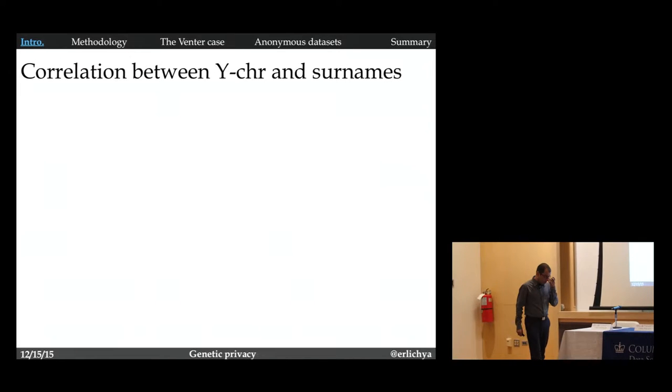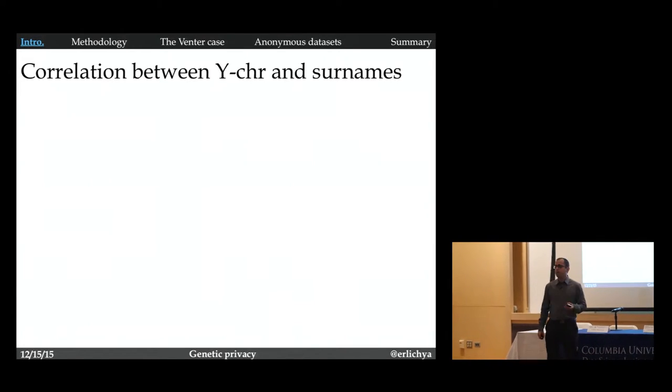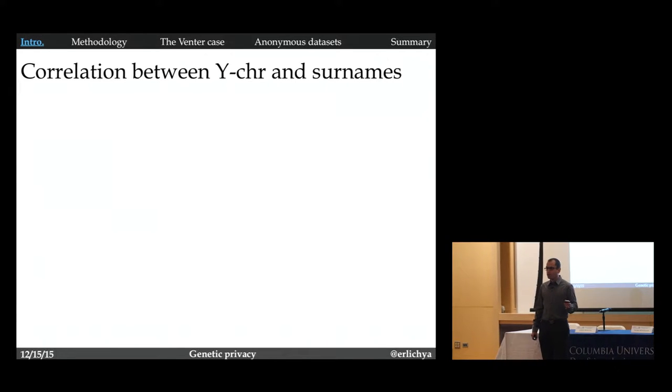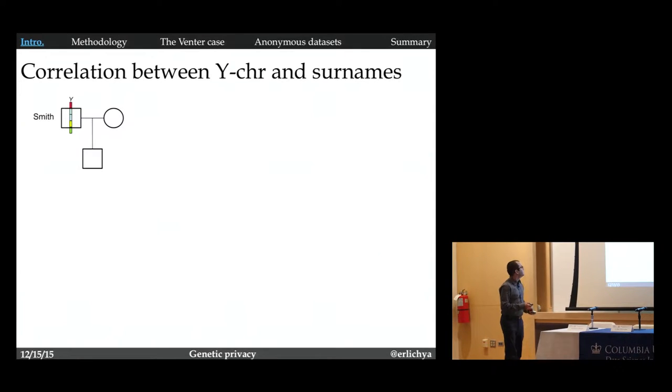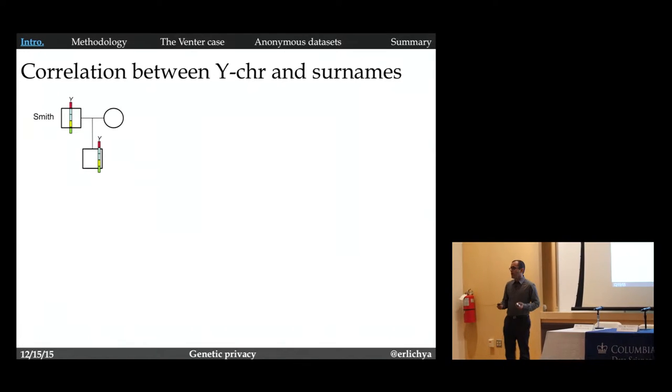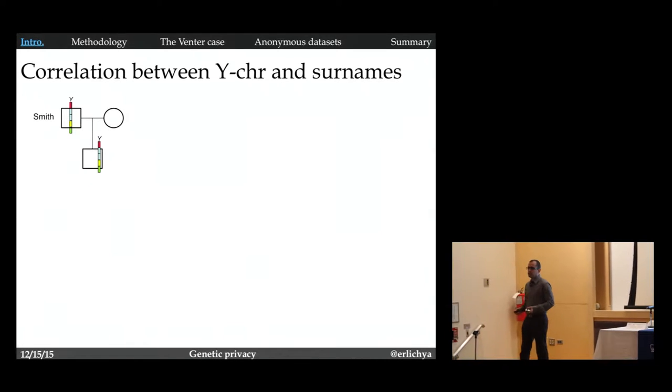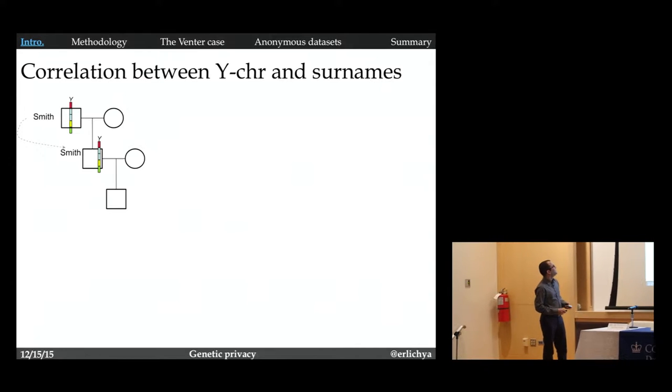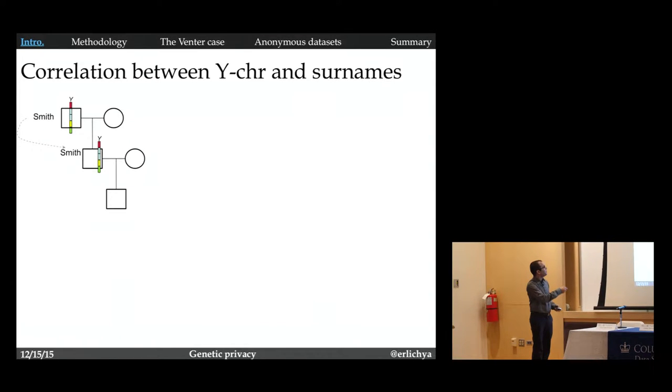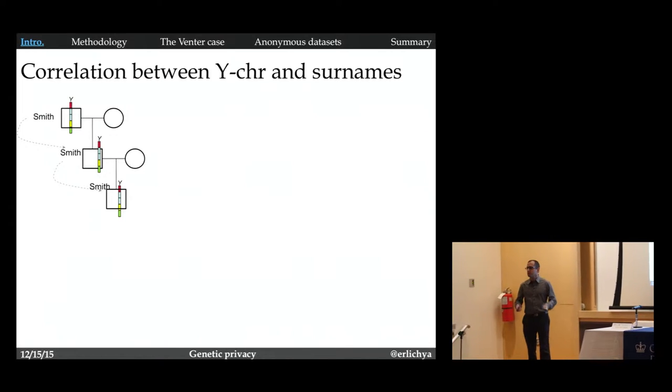Let's talk about genome hacking. We know for over a decade that there is a correlation between the Y chromosome and surnames. For instance, here we have a family, the Smith family. This family, let's say they have a son. The son gets his Y chromosome from his father, and in most Western societies, he will also get his surname. And now if this son is getting married, if Adam is getting married and also has a son, he will also give him his Y chromosome and also his surname. So this starts to create a correlation between Y chromosome and the surnames.